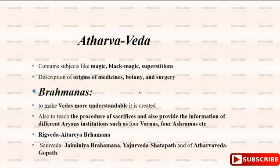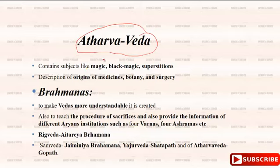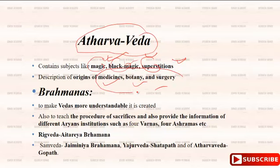The fourth Veda is the Atharva Veda, which is very important. It contains information on magic, black magic, and superstition. Besides this, it covers medicine, botany, and surgery. It is also a very authentic book for ancient Indian history.